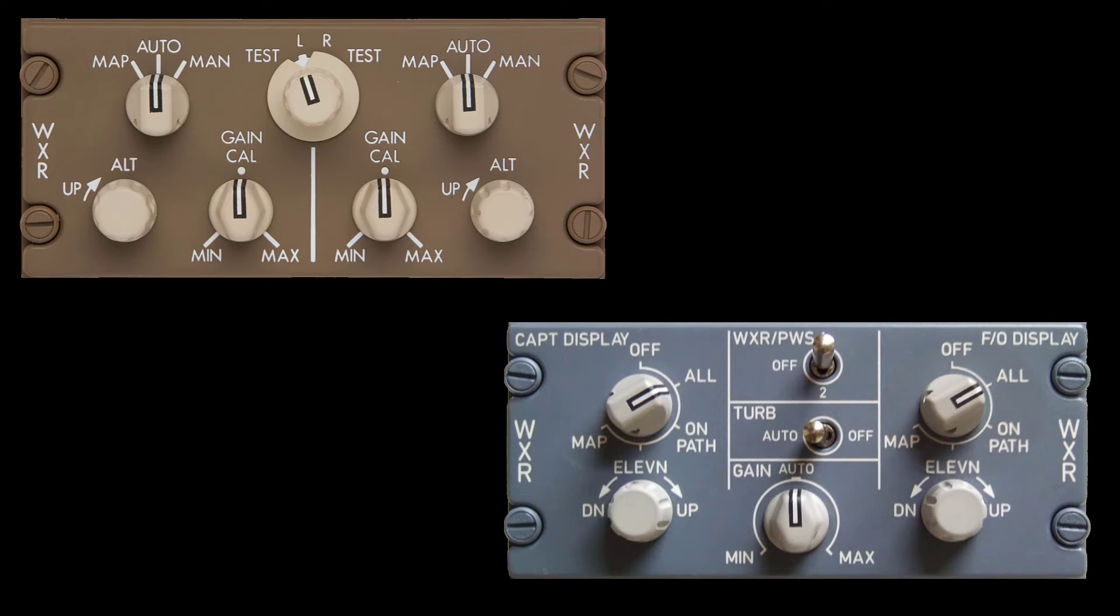Notice that these are split control panels allowing the captain and first officer to be in different modes, have different altitude slices, gain, and range settings.